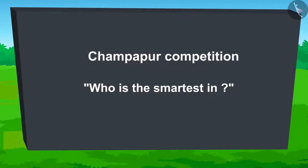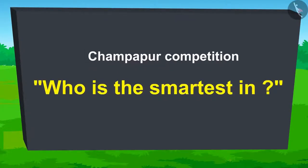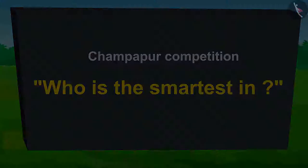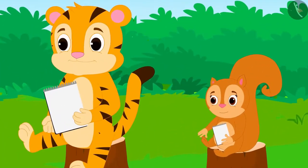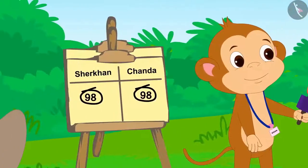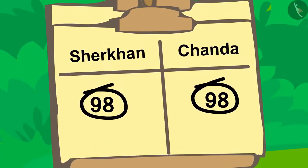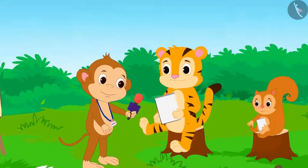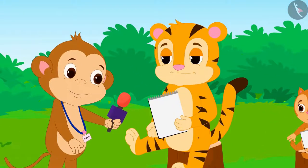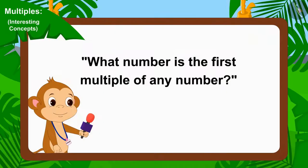The competition 'Who is the Smartest in Champapur' is going on. Shir Khan and Chanda have reached the last round. Both their scores are equal at the moment. The organizer of the competition, Babban, now posed a question in front of them.